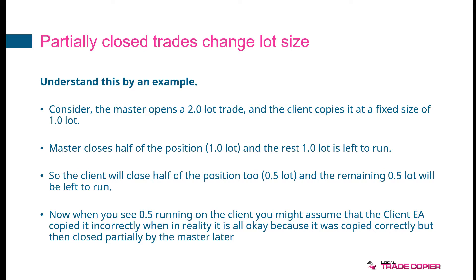The master closes half of the position, which is one lot, and the rest is left to run. So master had a two lot trade, closed one lot, one left to run — it closed half the position. The client will now have to close half of its position as well. But for the client, half of the position is 0.5 lot because it has one lot running. So it closes 0.5 lot and the remaining 0.5 lot will be left to run on the client account. You might come back to your platform later and see that 0.5 lot trade running and assume the client EA copied it incorrectly — but in reality, it's all okay because it was copied correctly at full lot size, then closed partially by the master later.